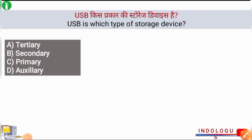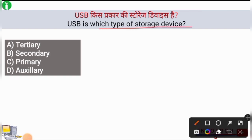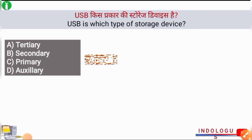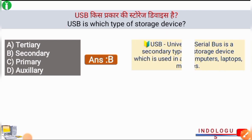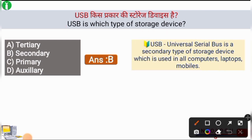Next question: USB is which type of storage device? The right answer is option B, secondary storage device. USB stands for Universal Serial Bus and it is a type of secondary storage device which is used in all computers, laptops, and mobiles.